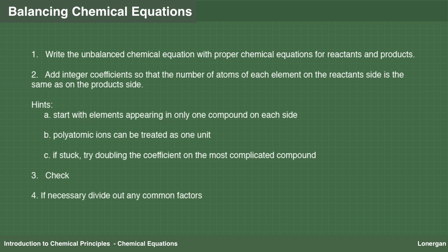The process of balancing a chemical equation is really just one of guess and check. Here are the steps. The first step is to write the unbalanced chemical equation, which requires you to identify the reactants and products and write their chemical formulas if only given their names. The second step is to add integer coefficients to balance the number of atoms of each type of element on the reactant side with that on the product side. This often involves a series of guesses, but the following hints may help: start with elements appearing in only one compound on each side; polyatomic ions can be treated as one unit; and if you get stuck, try doubling the coefficient of the most complicated compound. Once you think you have the equation balanced, check. Finally, make sure that you have reduced the coefficients to their lowest whole number values by dividing out any common factors.